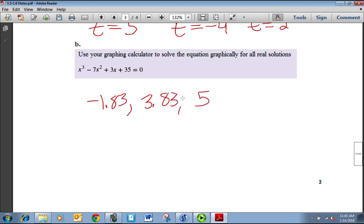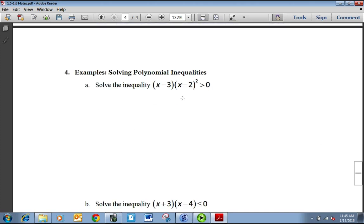So our zeros here, or the answer to this equation, were -1.83, 3.83, and 5. Now you might be thinking, how many decimals should you have? Usually two is enough. Sometimes you need to have three. MyOpenMath will usually specify how many that it needs. If it doesn't, then two is usually good.